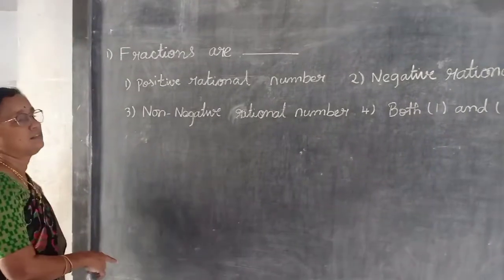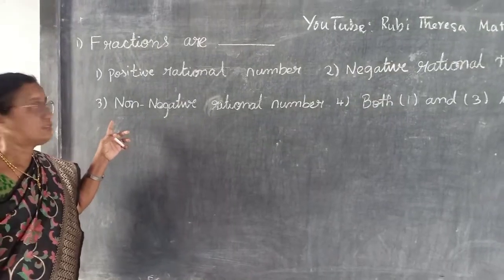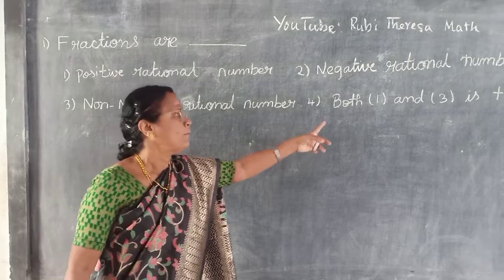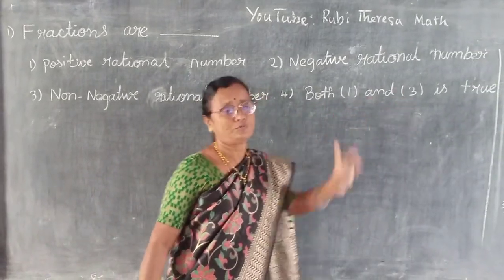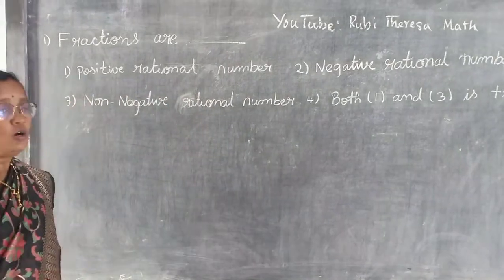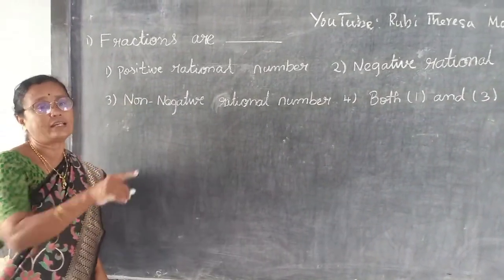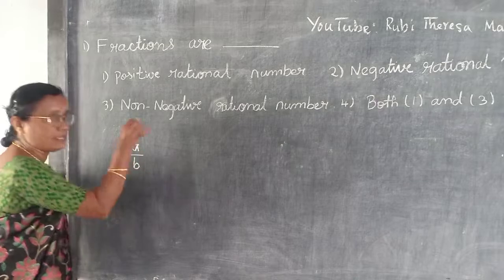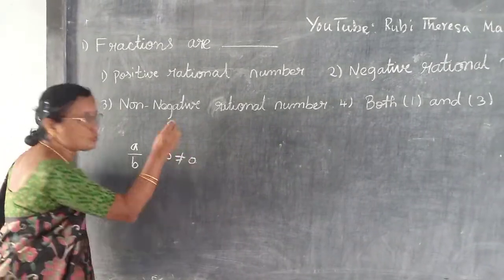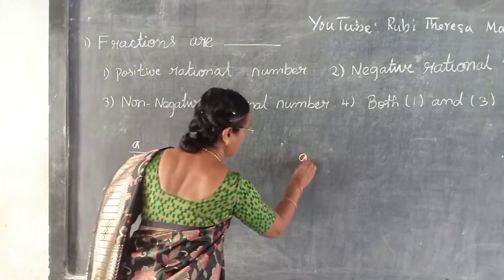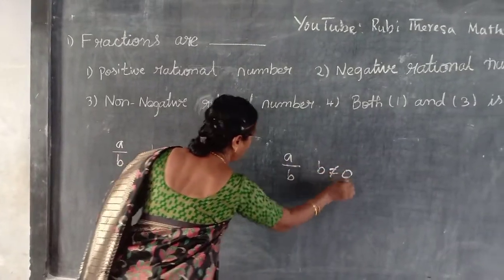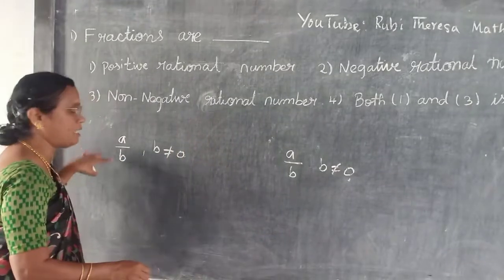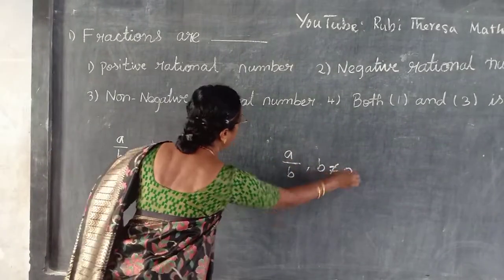First, you should know the general form of fractions and rational numbers. A fraction is in the form A by B, where B is not equal to 0. Both rational numbers and fractions are in this form — A by B, where B is not equal to 0.